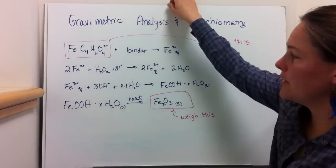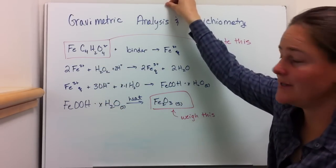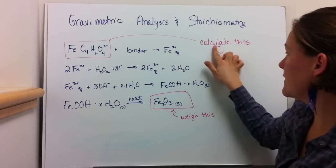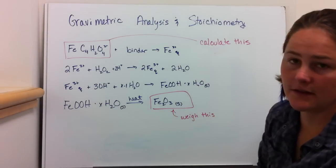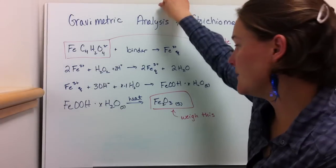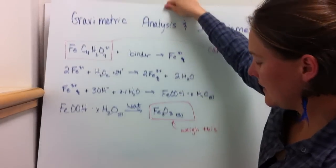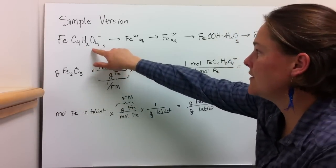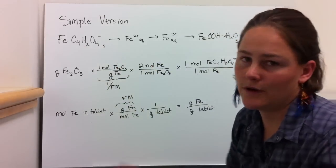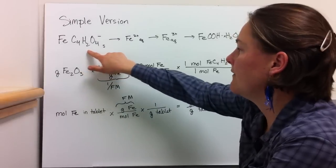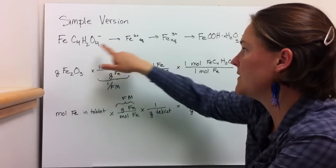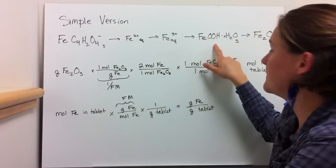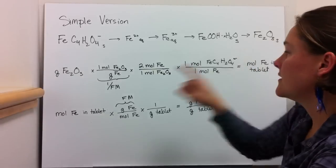When you boil it down to simple terms, it's actually much easier. We weighed this and we want to calculate how much iron is in the initial vitamin. You can boil this down — you have iron in the vitamin going to iron-2+, to iron-3+, to ferrihydrite, to hematite.